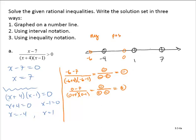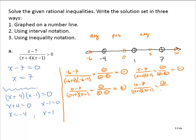Testing between 1 and 7, how about x equals 5? I would have 5 minus 7 over 5 plus 4 times 5 minus 1. That gives me a negative over a positive times a positive, and the end result would be negative. Finally, testing a number greater than 7, how about 10? That gives me a positive divided by a positive times a positive, which is a positive.